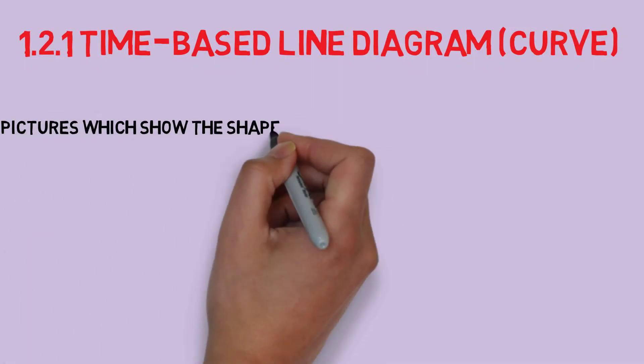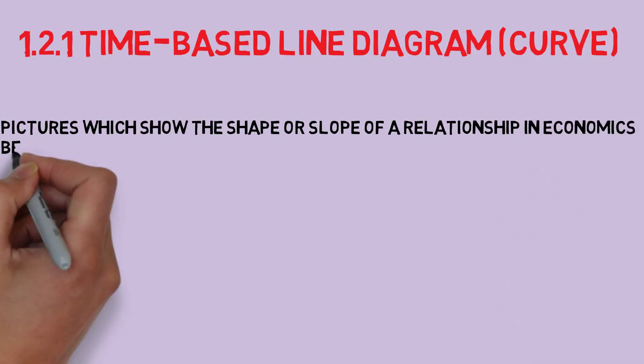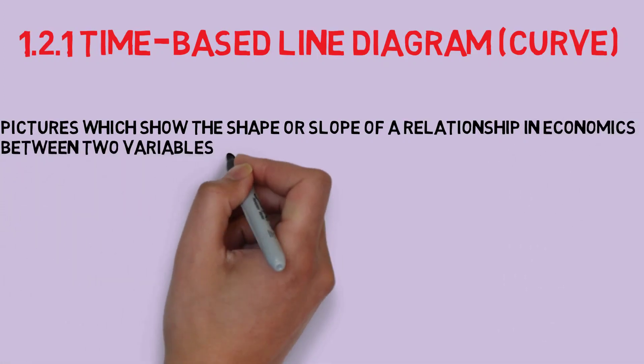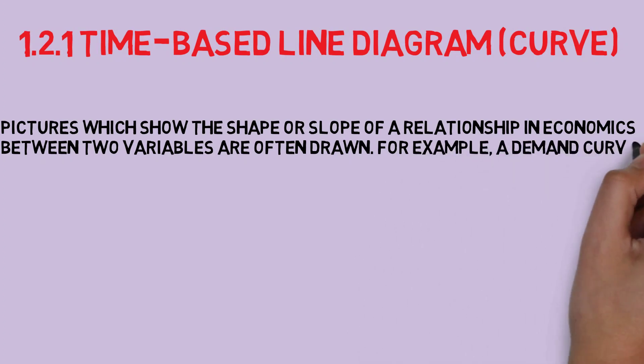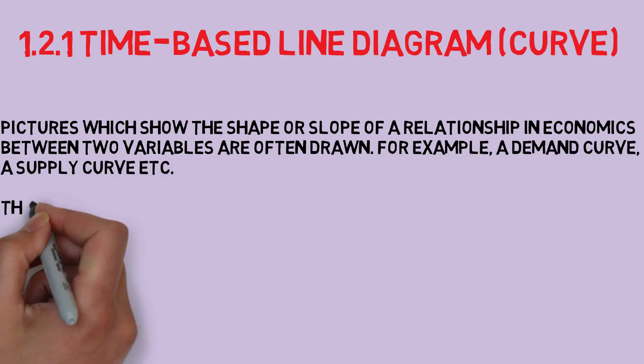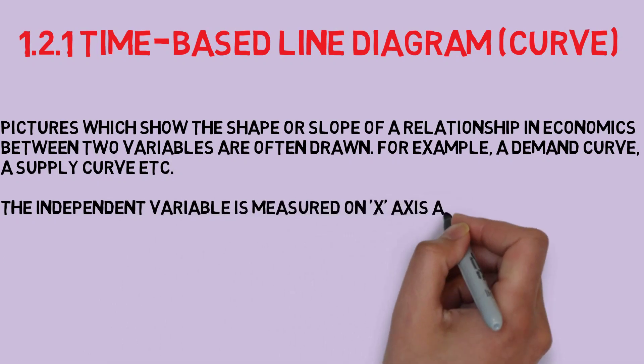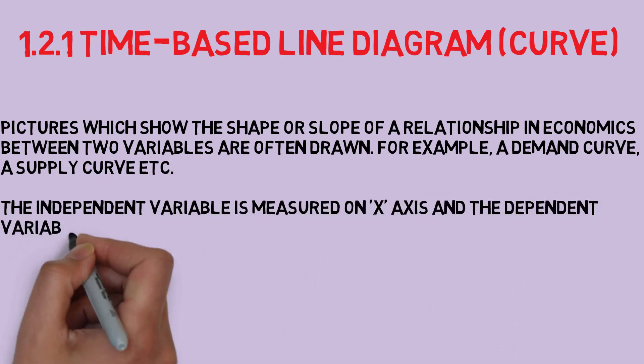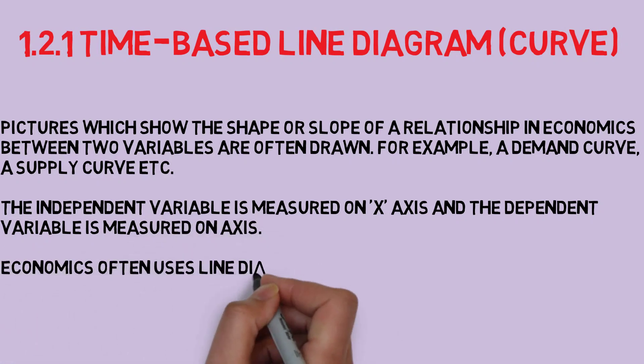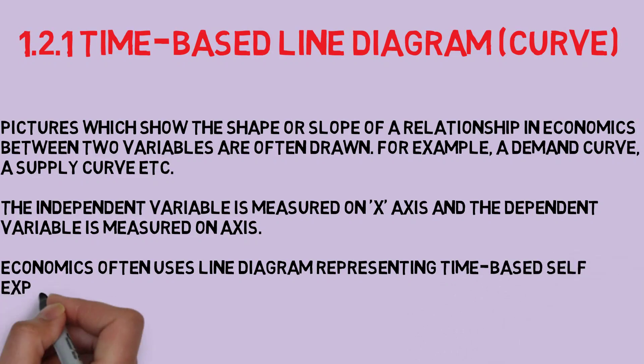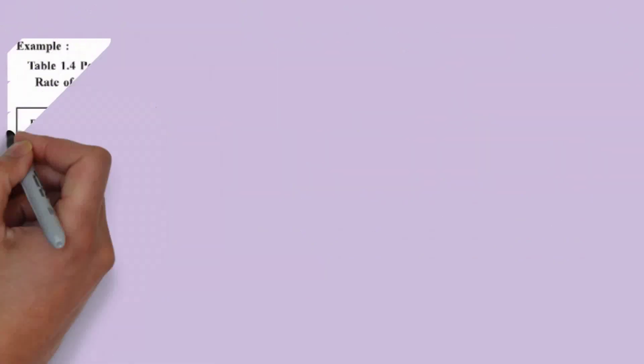We will start from time-based line diagram. A picture which is drawn by connecting individual data points which makes a structure like slope. In this type of diagram, X-axis denotes independent variable that is time, and Y-axis denotes dependent variable that is distance.